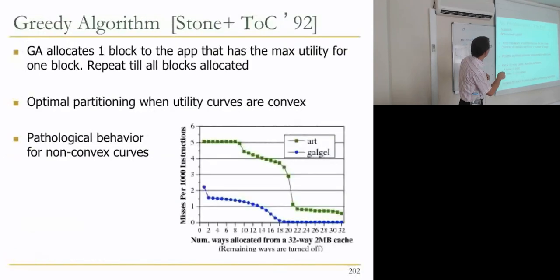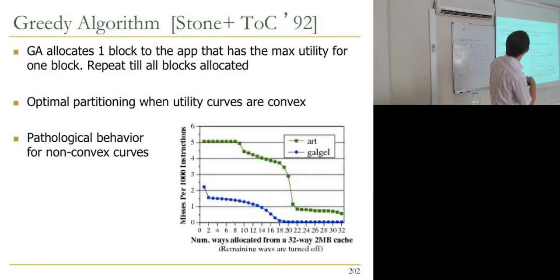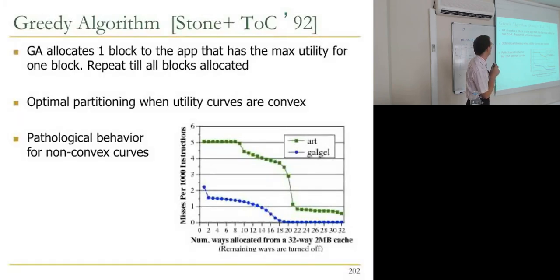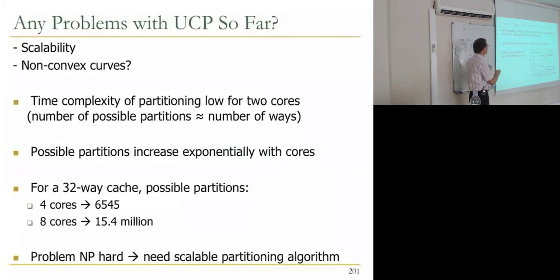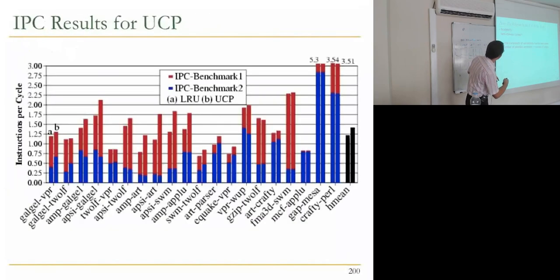There's also a problem with non-convex curves. One solution is a greedy algorithm: allocate one block to the application that has the maximum utility for that block. That's one way of solving the scalability problem — instead of exhaustive search.